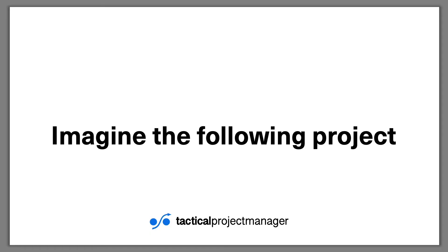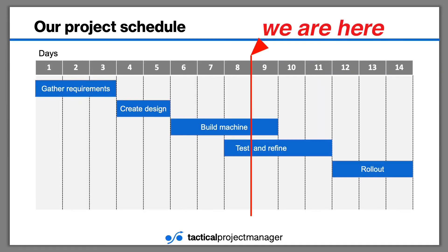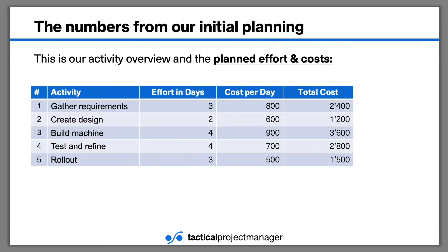Imagine the following project. We are going to build a machine for our client, and we're going to do this in only 14 days. Here's our project schedule. We have five main activities. We have planned three days for gathering requirements, then our engineers spend two days creating the design. Afterwards, we start building the machine, which takes four days. In parallel, our experts can already start testing and refining the machine with the client. And starting at day 12, we roll out the machine, which takes three days.